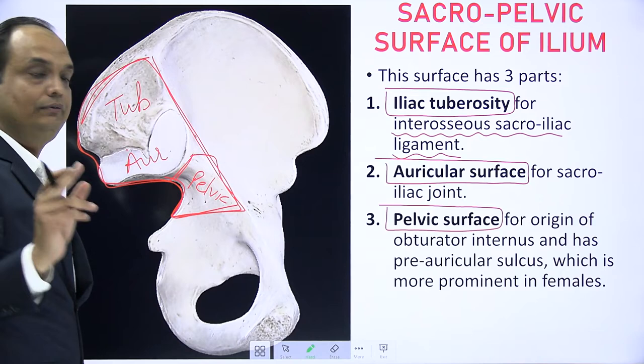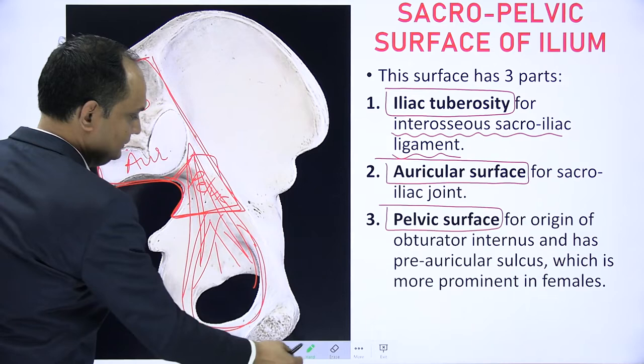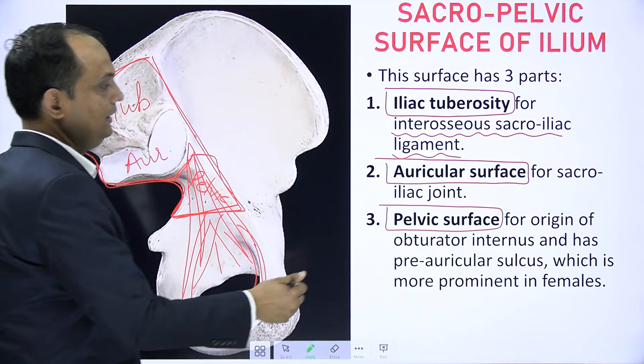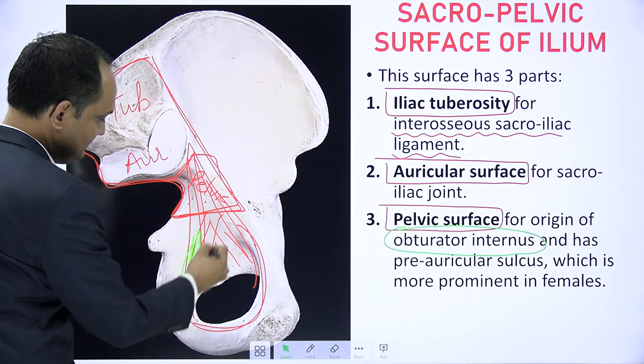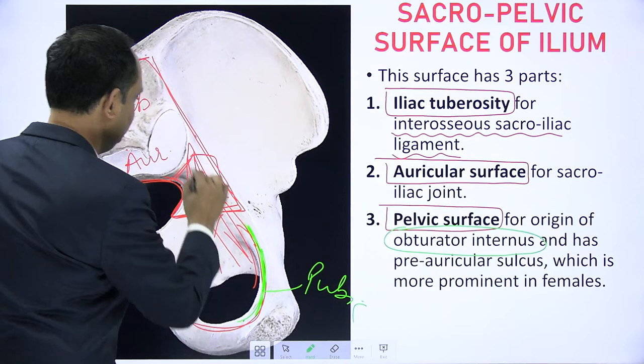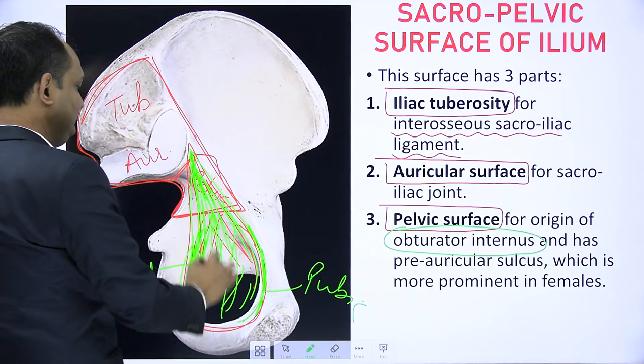The pelvic surface gives rise to the origin of a muscle which includes all three segments of the hip bone. The question is: which muscle of the hip bone arises from all three components — ilium, ischium, and pubis? The answer is obturator internus. The obturator internus arises from the pubic fibers, ischial fibers, and fibers from the ilium. This muscle is present on the inner side of the obturator foramen — that is why it is known as obturator internus muscle.